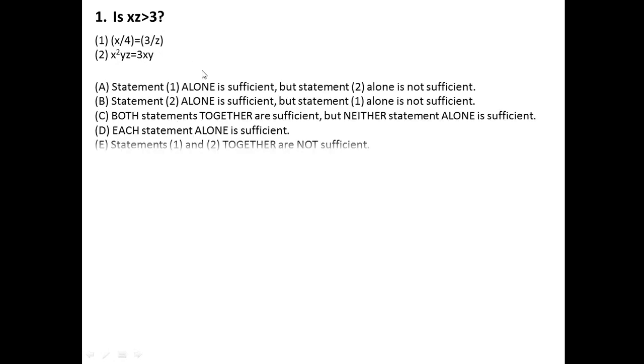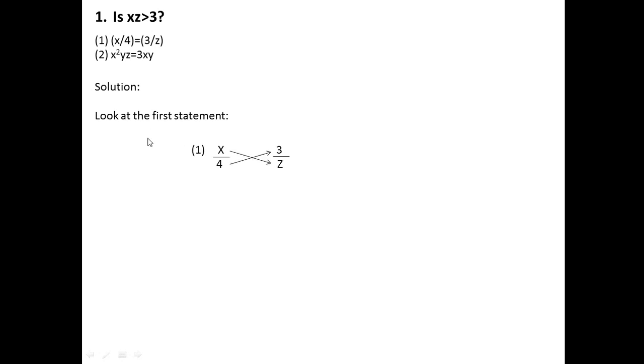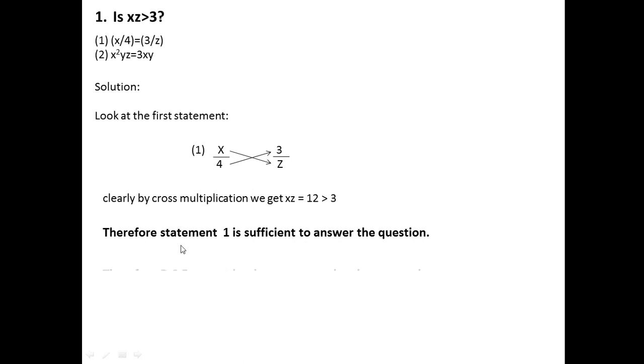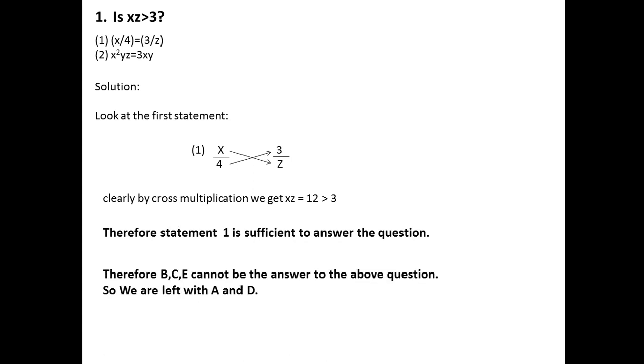Now let us move to the first question of flash test 2. The question says: is XZ greater than 3? Statement one: X divided by 4 is equal to 3 divided by Z. Statement two: X² YZ is equal to 3XY. This is a data sufficiency question. Looking at statement one, by cross multiplication we get XZ is equal to 12, which is clearly greater than 3. Therefore, statement one is sufficient, and by the AD/BCE approach, B and C cannot be the answer. We are left with A and D.